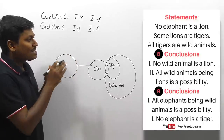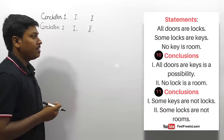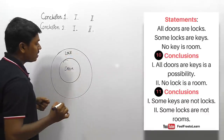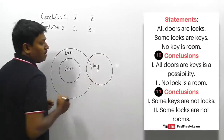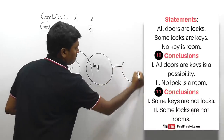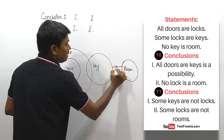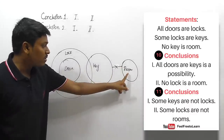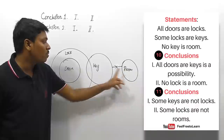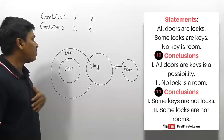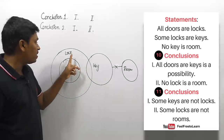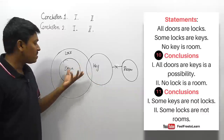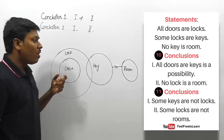For the first set, conclusion two follows; for the second set, conclusion one alone follows. Next question. Statements: 'all doors are locks,' 'some locks are keys,' and 'no key is room.' From the diagram: no possible connection between room and key, but there is a possible connection between room and doors and room and lock. First set, conclusion one: 'all doors are keys is a possibility' — door, lock, and key are all inside a single Venn diagram, so possibility follows.